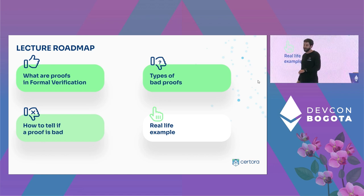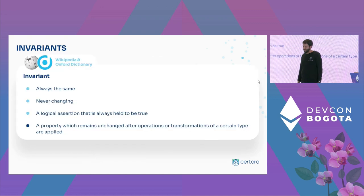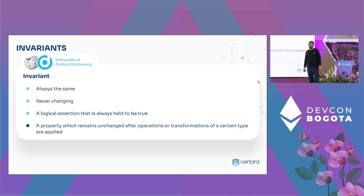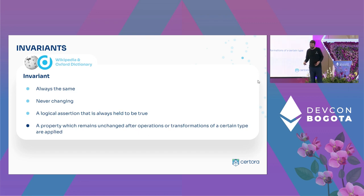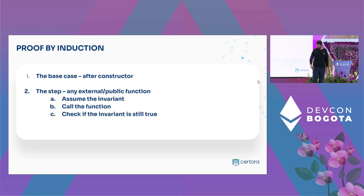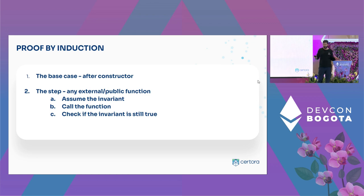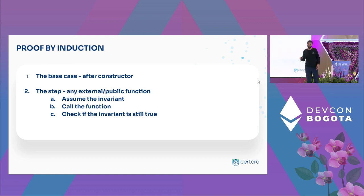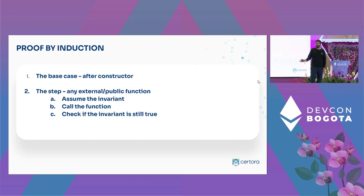Now let's delve into the real-life example. First, a new notion: an invariant is something that is always true and kept after calling functions of a smart contract. We prove invariants by induction. The base case checks if the condition is true right after calling the constructor. The inductive step assumes the invariant holds, calls some public or external function of the contract, and checks that the condition is still true afterwards. We check for every possible function of the contract.